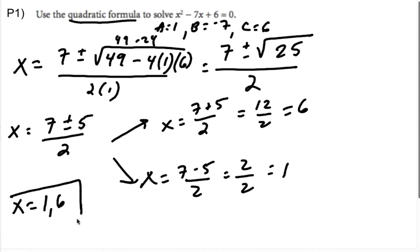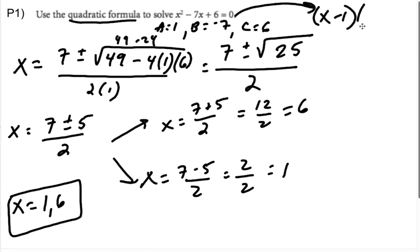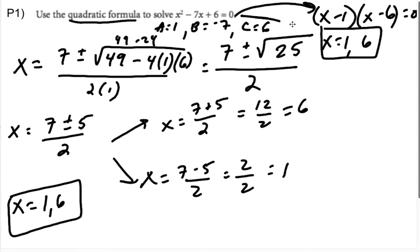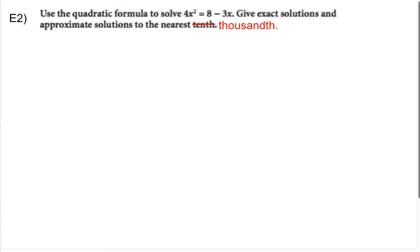If you'd chosen to factor, this does factor as (x - 1)(x - 6). You could FOIL to check that gives -7x and +6, which proves the same point — you get the same answers. Again, I want you to practice using the quadratic formula with things that factor, because when you get to the ones that don't factor, you'll need to know how to use it.